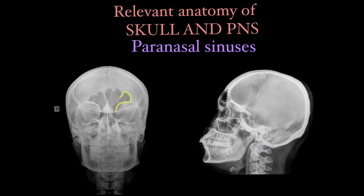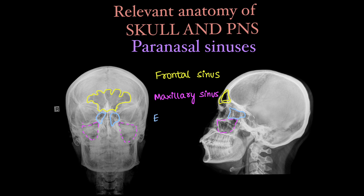Now we will look into the paranasal sinuses as seen on x-ray. Here we can see the frontal sinuses. Since they are filled with air they look darker than the bone. Here we have two paired maxillary sinuses. The one in blue is the ethmoid sinus and the one in green is the sphenoid sinus — frontal, maxillary, ethmoid and sphenoid sinus.